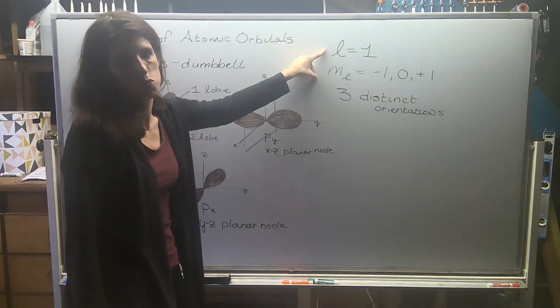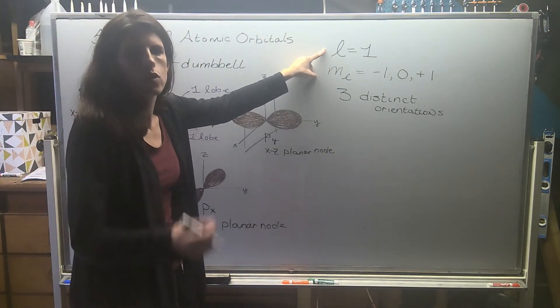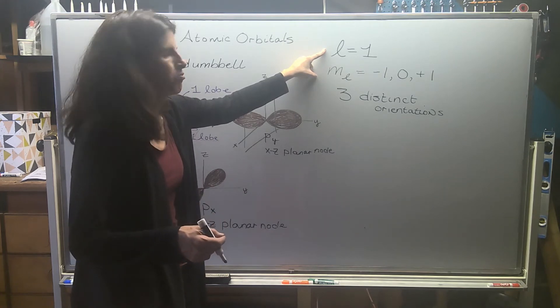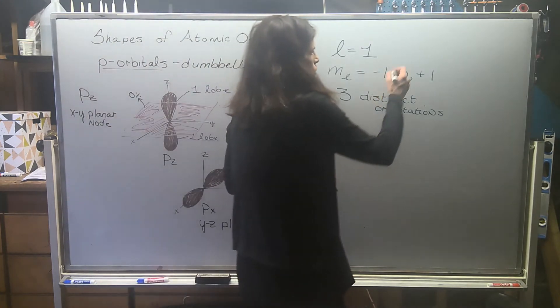Last thing, just to tie everything together. L equals 1. The L value also ties into the number of planar nodes.